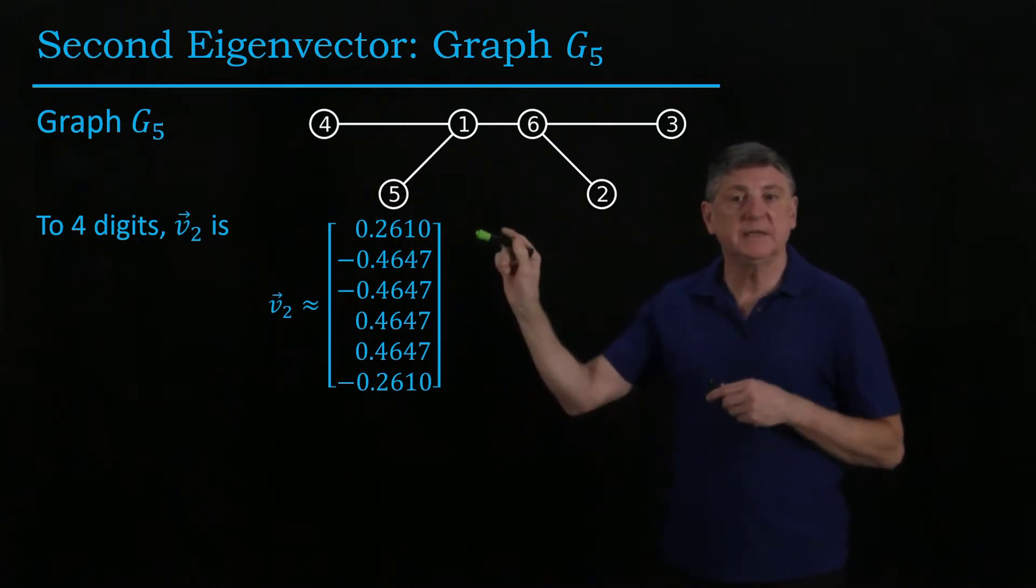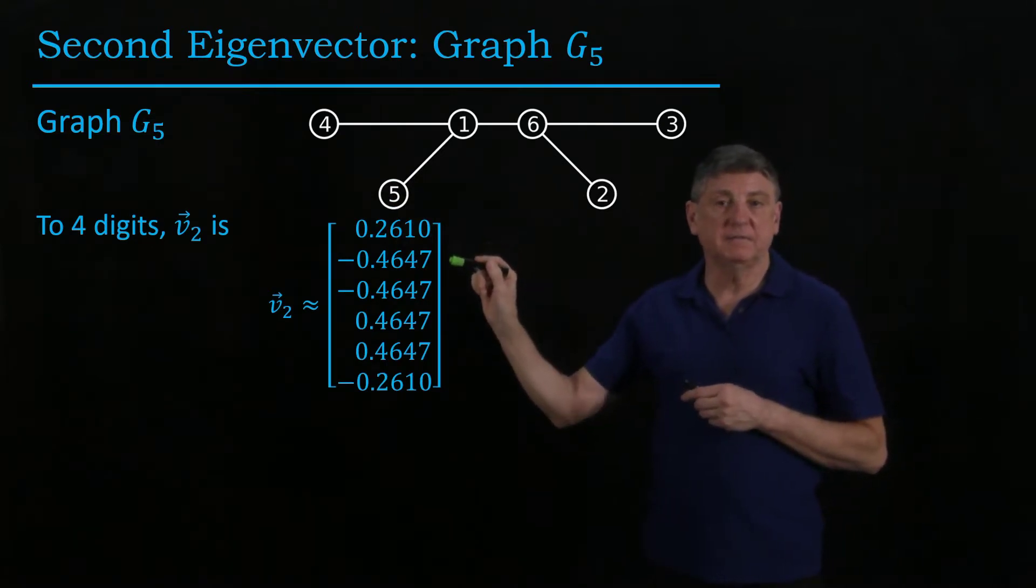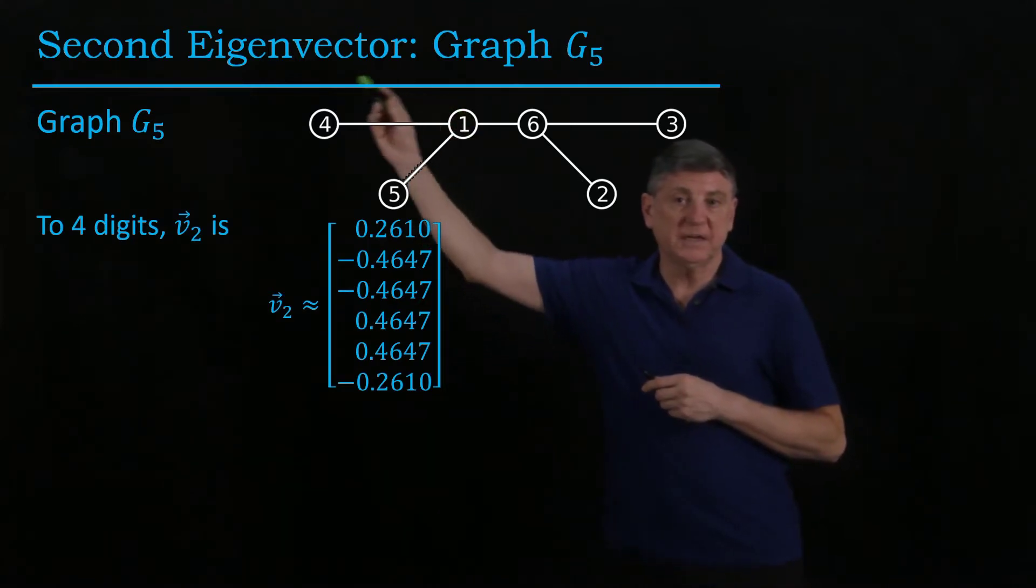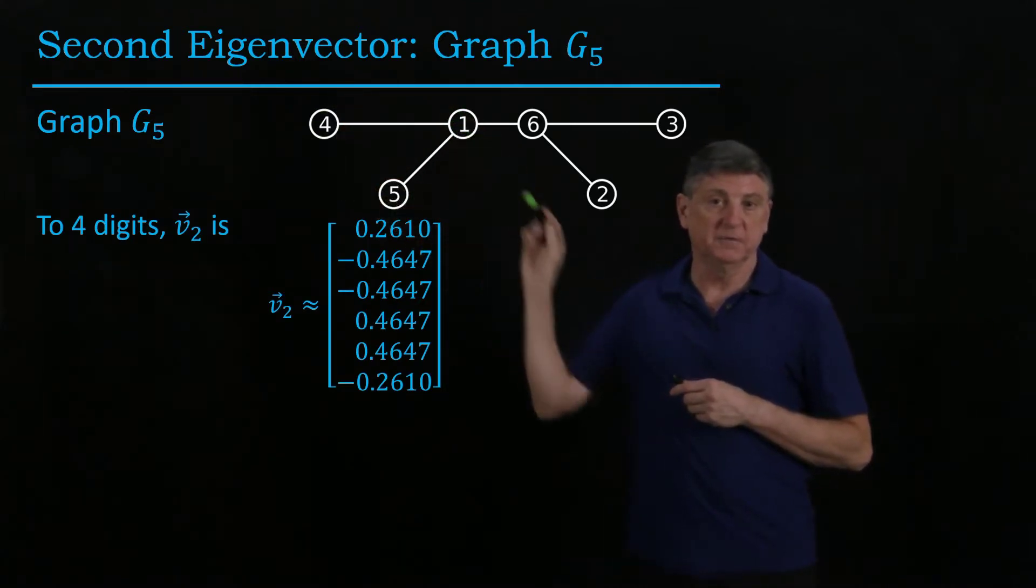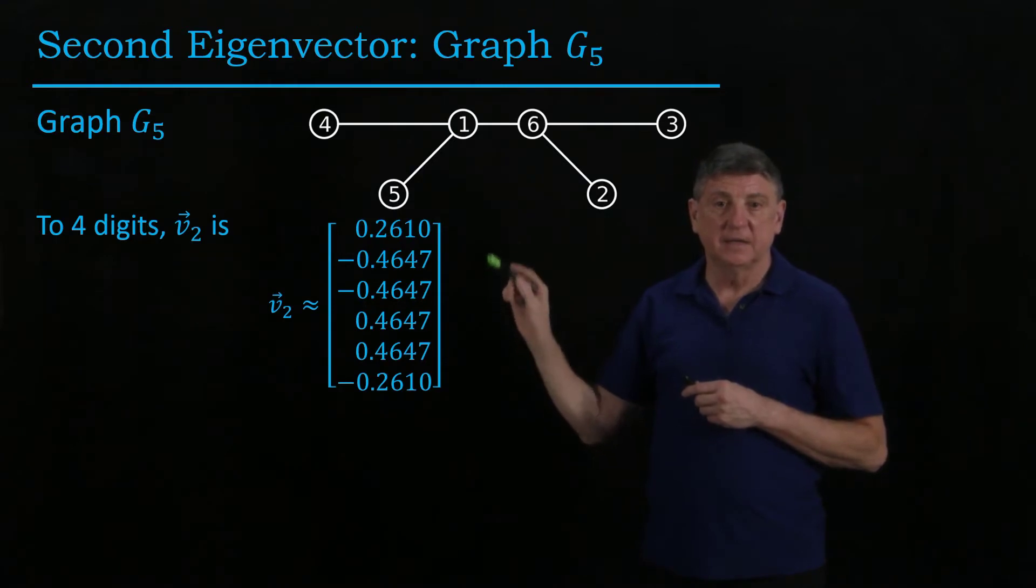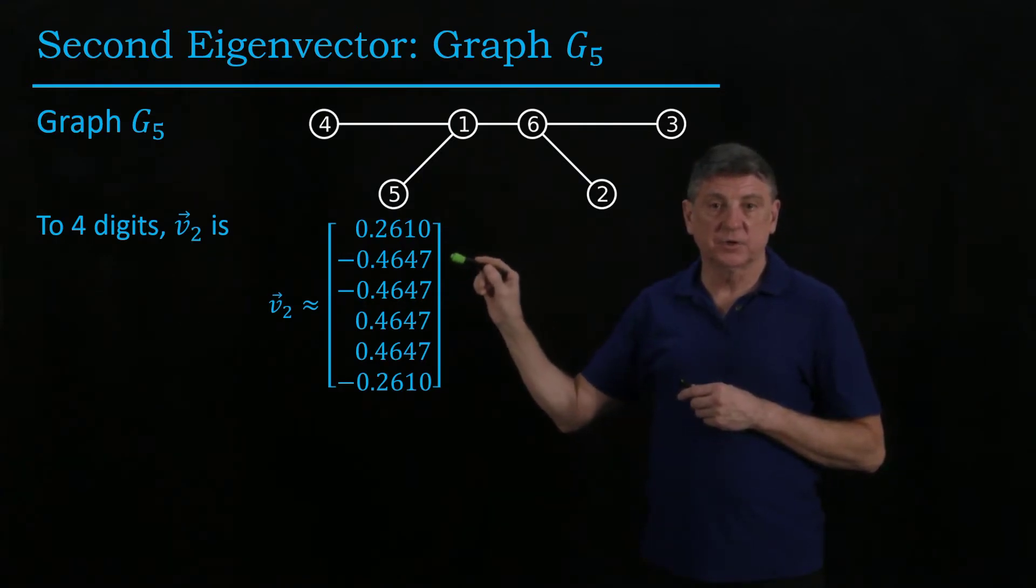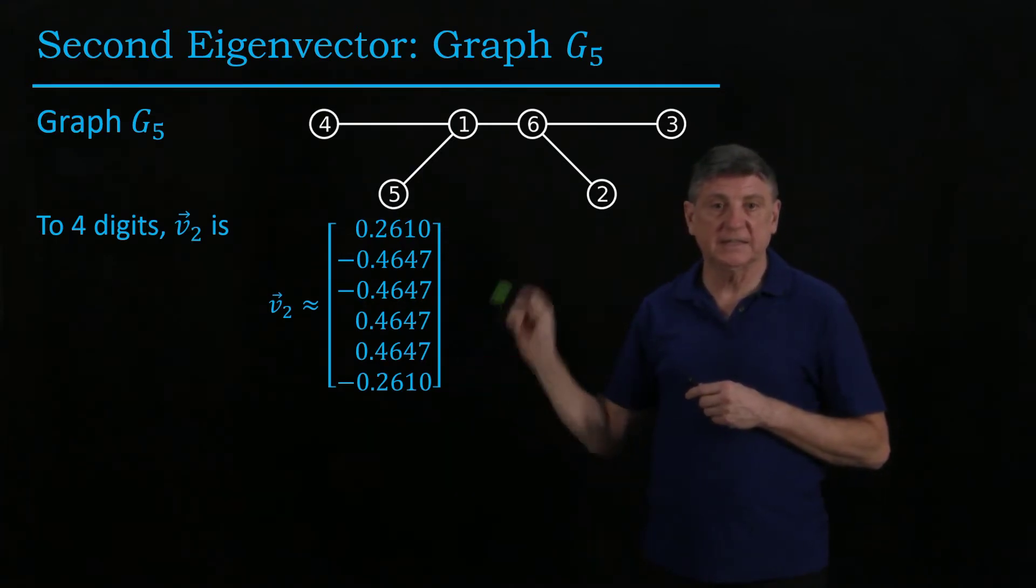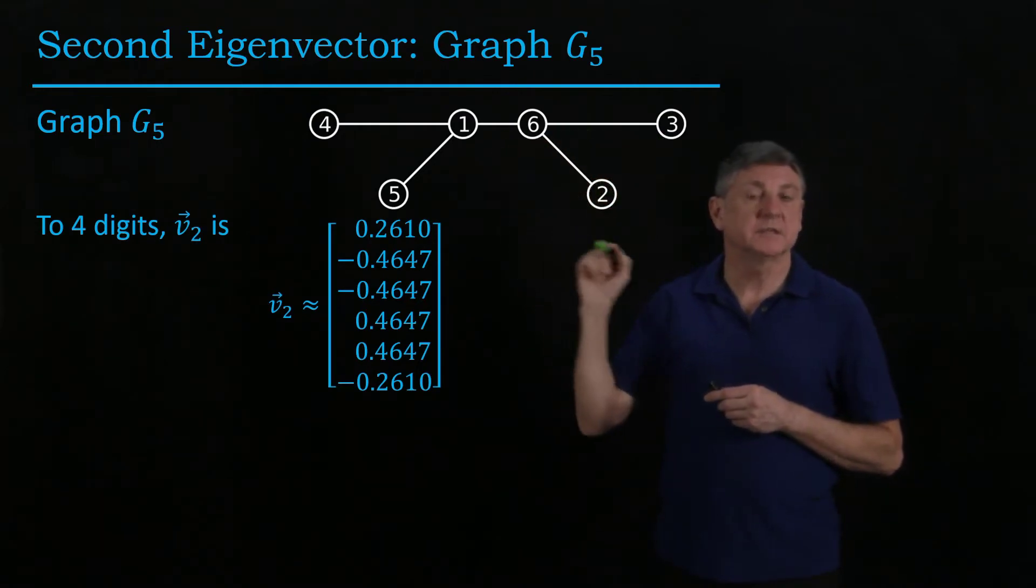And so what's happening is this eigenvector, the positive entries are corresponding to this cluster of vertices, and the negative, which are two, three, and six, are corresponding to this.